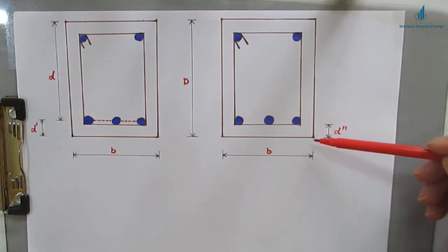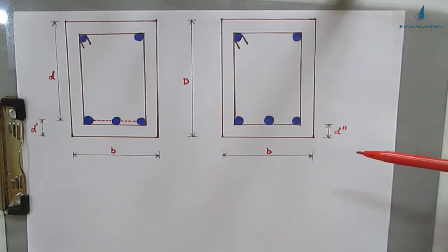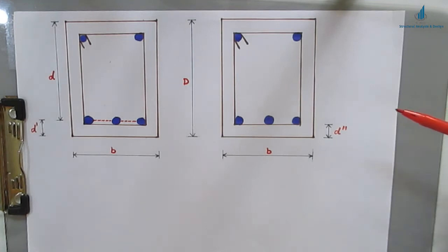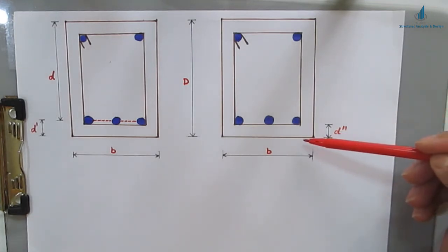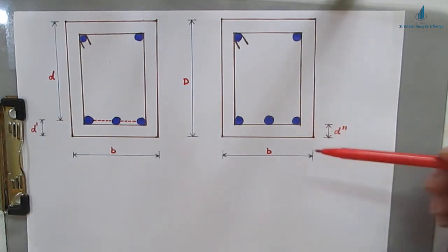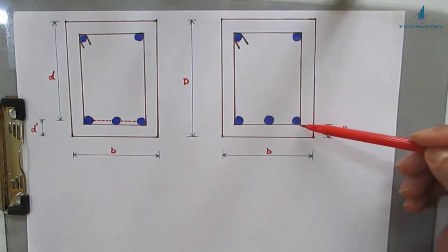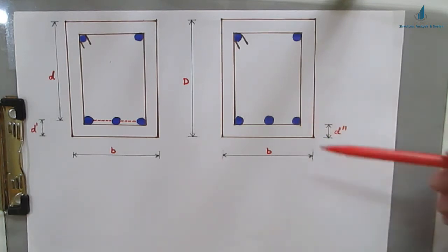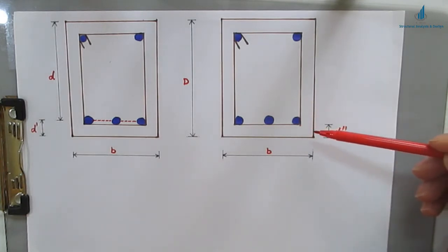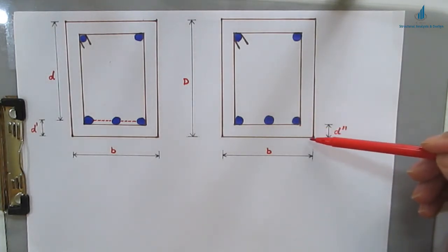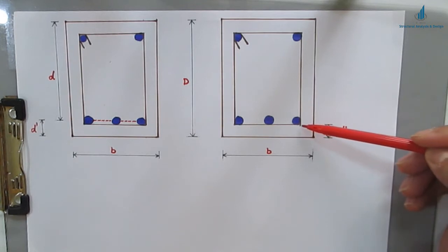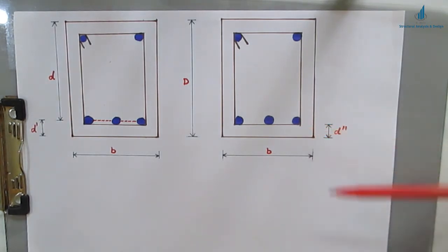Clear cover, d double dash, is the distance measured from the exposed concrete surface — and one important thing: without plastering or any other finishes, plastering is not counted as cover. So it is measured from the exposed concrete surface to the nearest surface of reinforcement. The nearest surface of reinforcement is the stirrup, not the main bar. So the distance from the exposed concrete surface to the nearest surface of the reinforcement is known as clear cover.